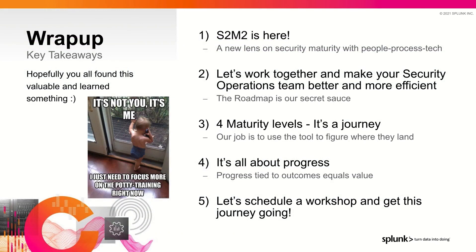So just to wrap this all up — this is all about S2M2. We want to help you come to us, let us do this as an assessment, and help you figure out where you are in your security journey. Let's work together and make your security operations team better and more efficient. There are four maturity levels. It's all about the journey. Our job is to use this tool to figure out where you land. It's all about progress — progress tied to outcomes equals value. We want to help you get the most value out of your investment in Splunk. We are here as your trusted advisor to help you do those things.